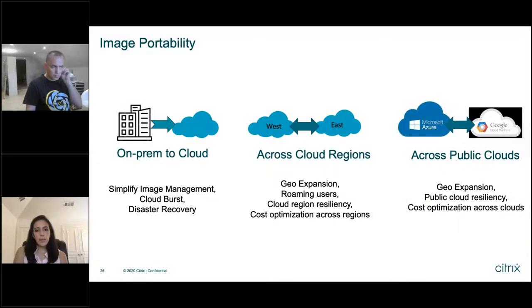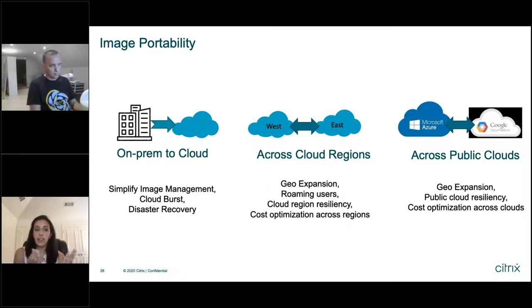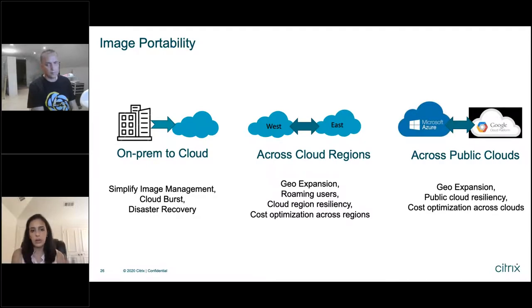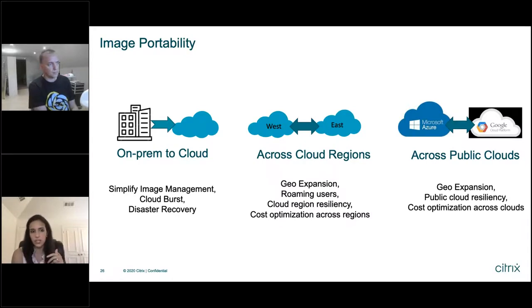Now we are going to talk about image portability. Image portability is a feature that's currently in tech preview and you're going to hear a lot more about it in the coming weeks from Citrix. Essentially, image portability simplifies image management and allows you to move those images very easily from on-prem to cloud, across different cloud regions, or across different public clouds. So if you have a multi-cloud approach utilizing Azure and something like GCP, image portability would come in to make that image migration very, very easy.